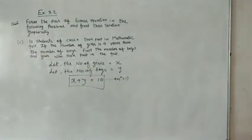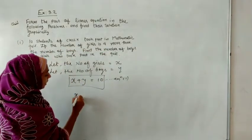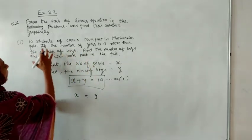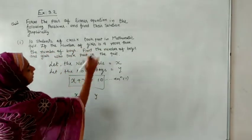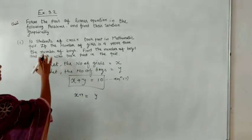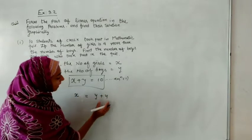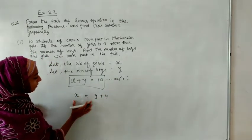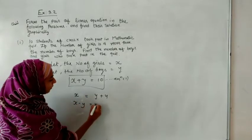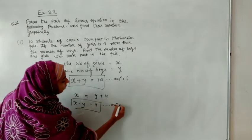Now we have to form the second equation. The number of girls is x and the number of boys is y. If the number of girls is 4 more than the number of boys, then x minus y equals 4, and that will be our equation number 2.